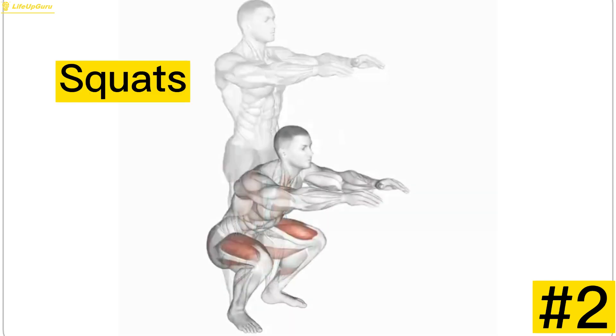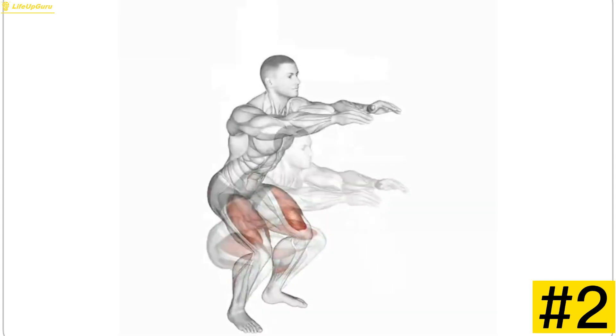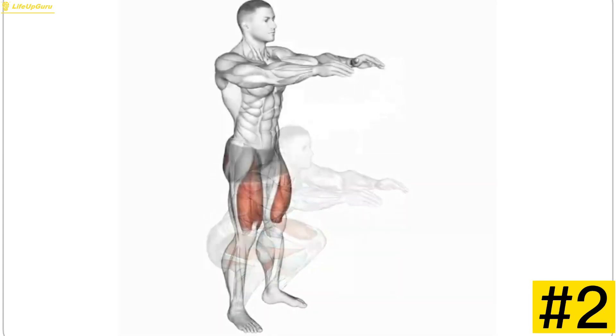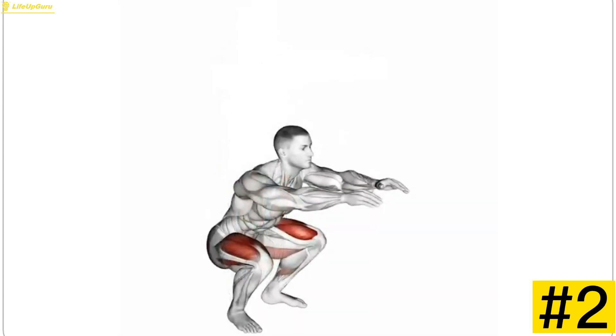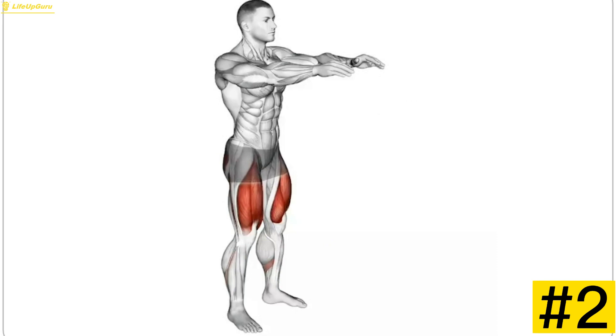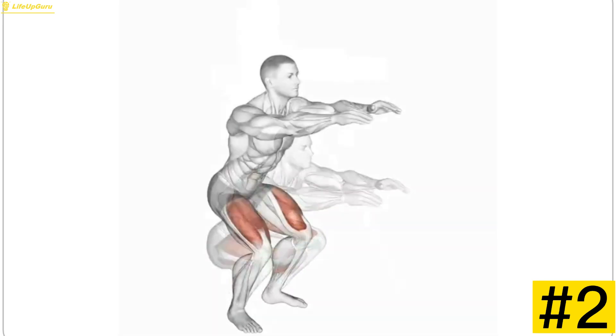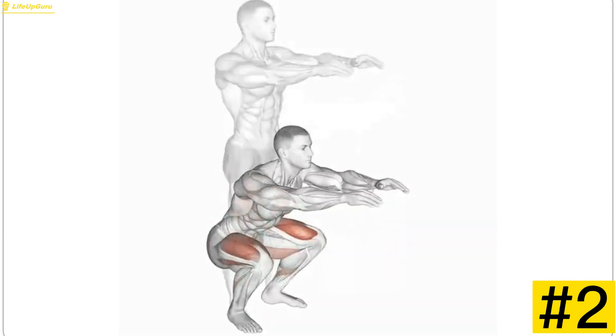Exercise 2, Squats. Squats are fantastic for targeting your quadriceps, hamstrings, glutes, and even your core. Stand with your feet shoulder-width apart, lower your hips down as if you're sitting back into a chair, and then return to the starting position. Remember to maintain good form and keep your knees in line with your toes.